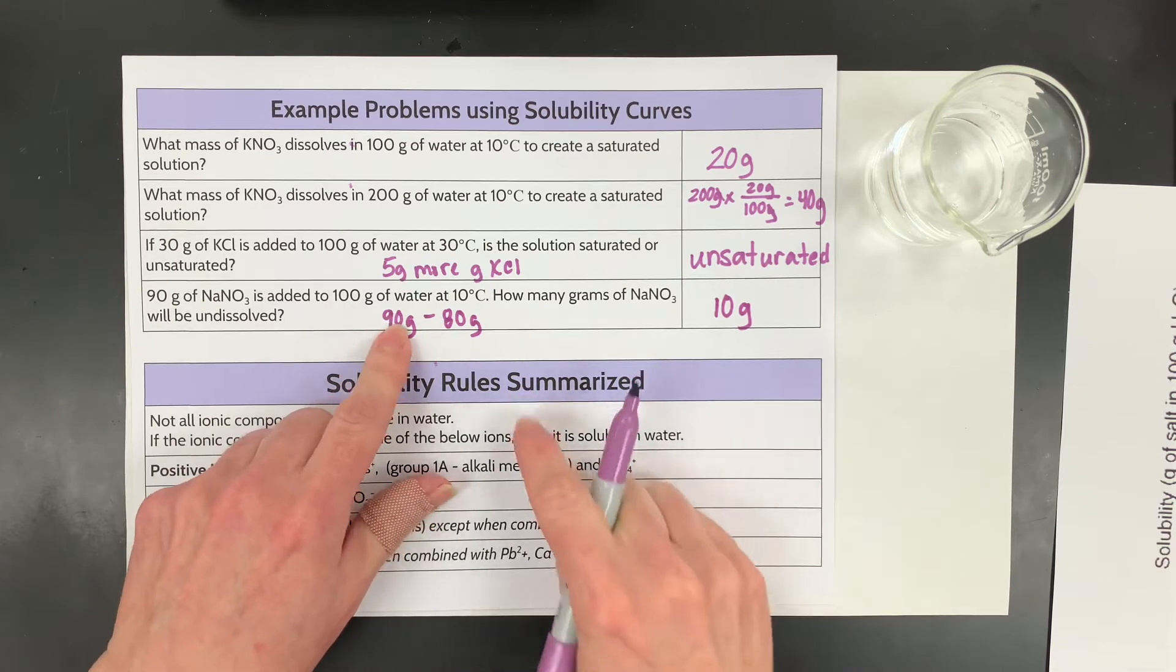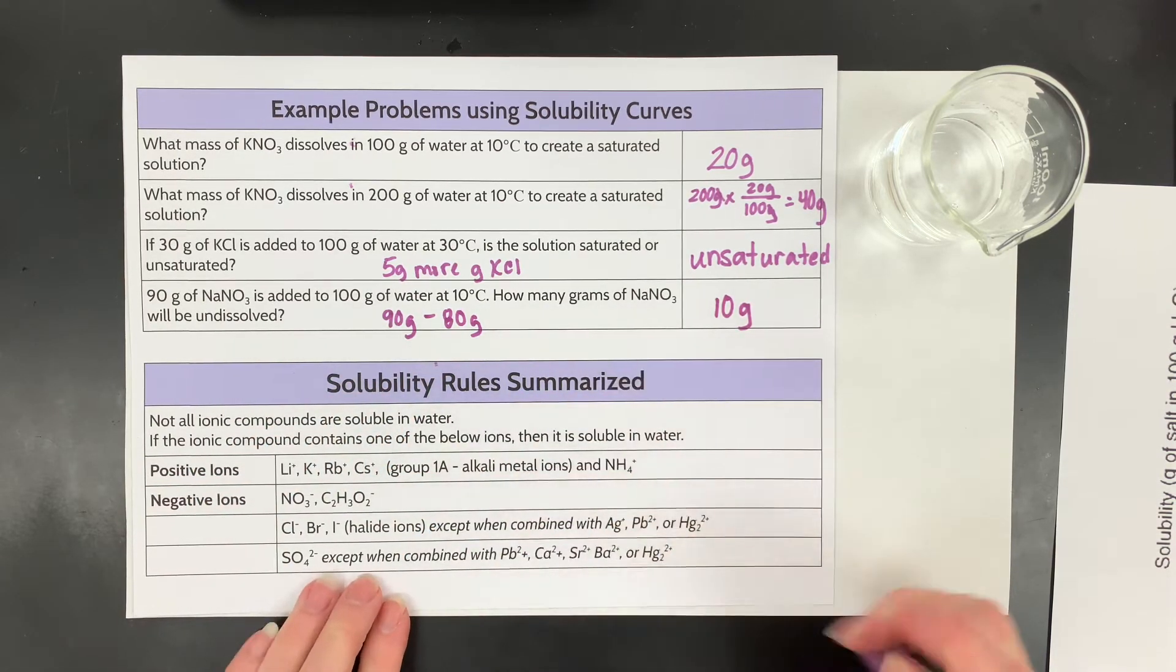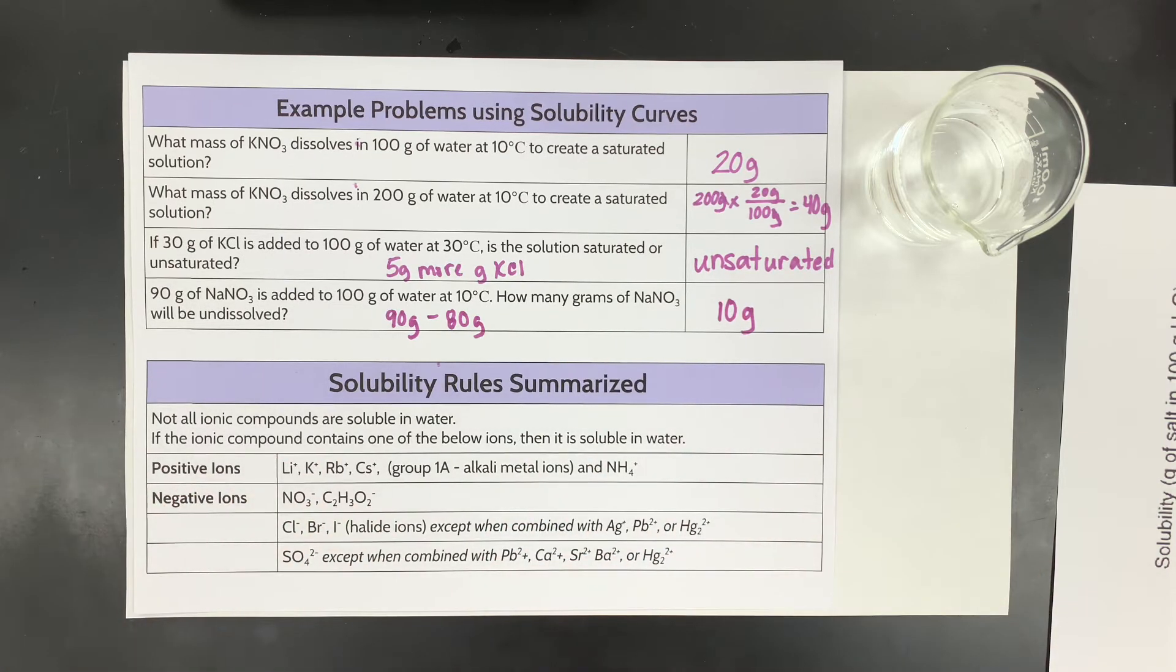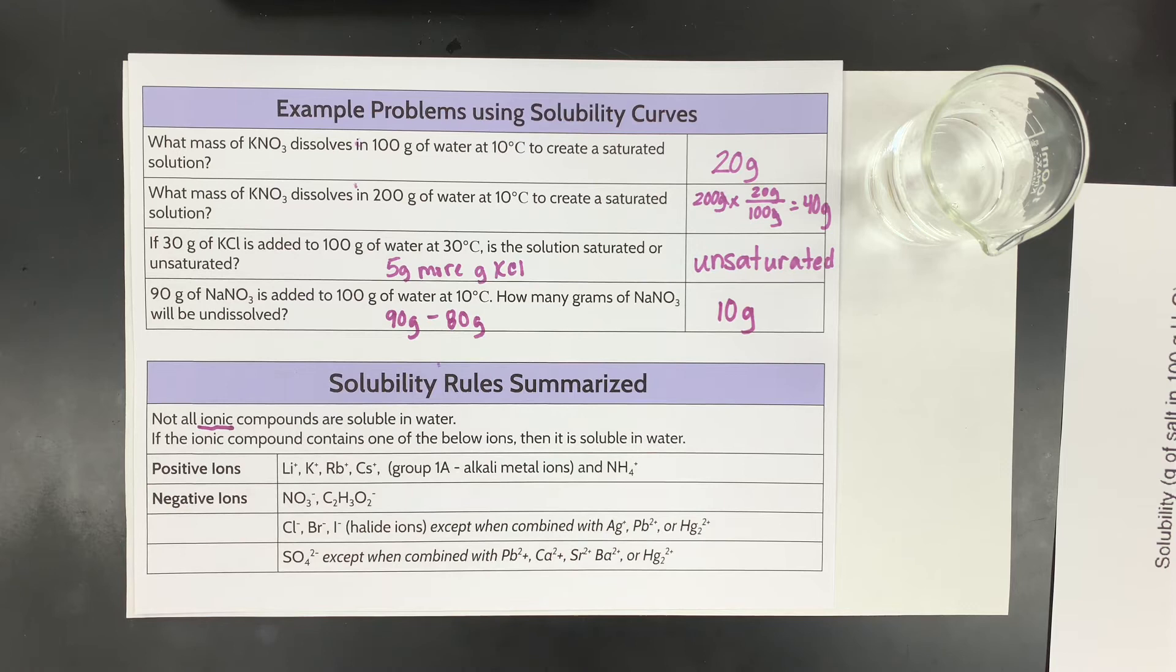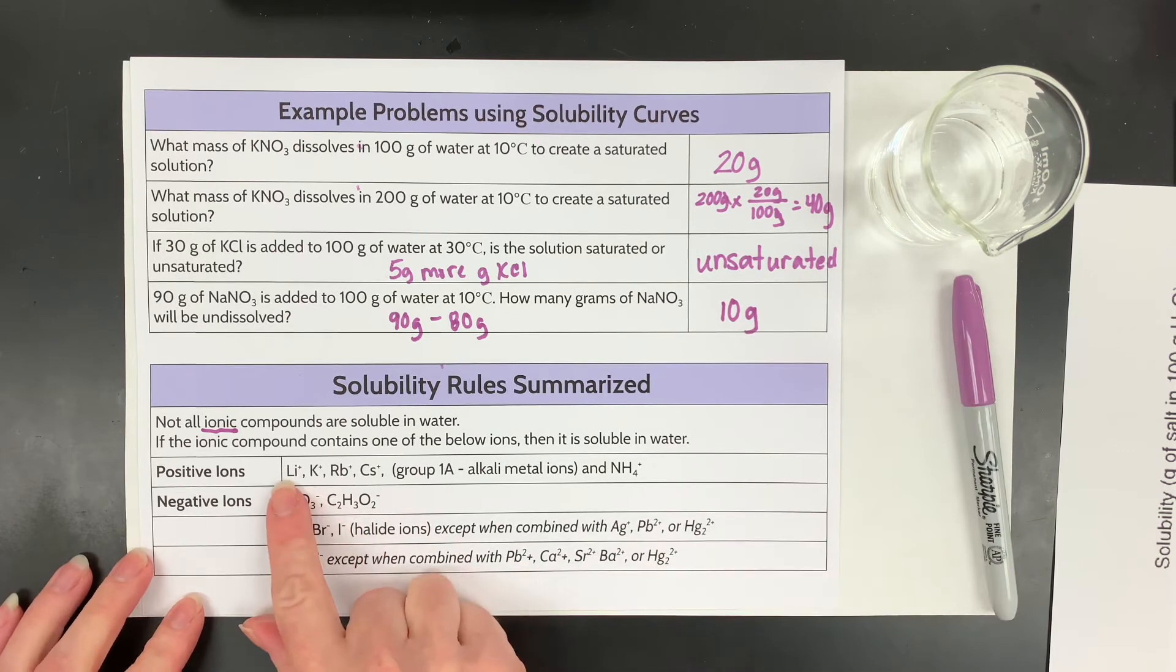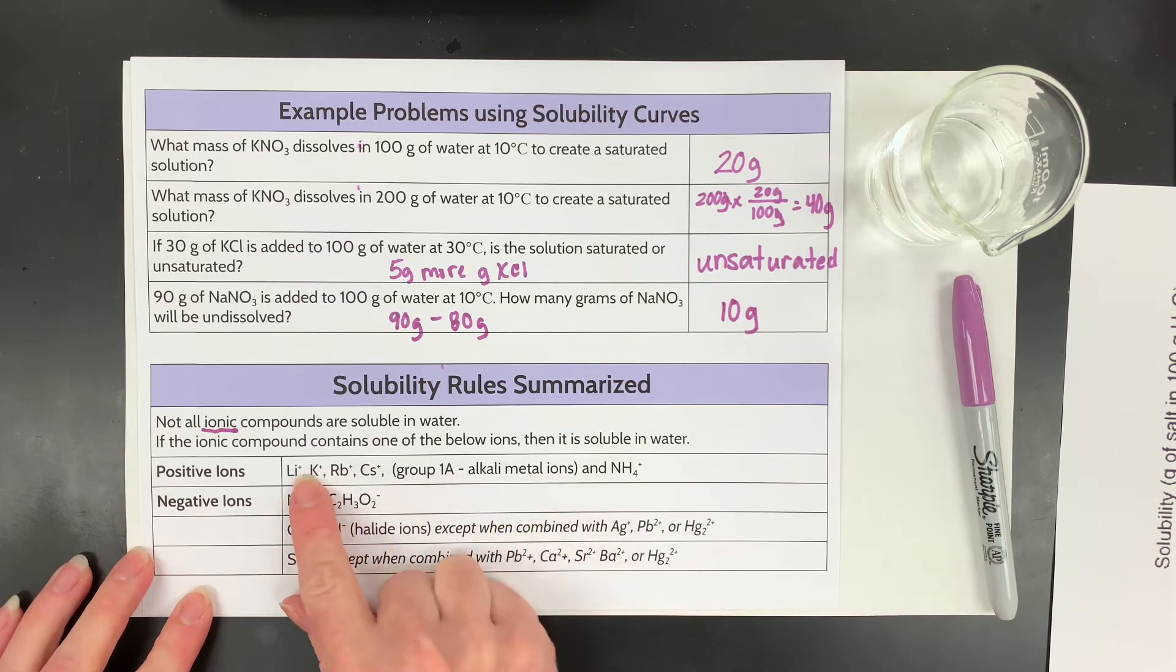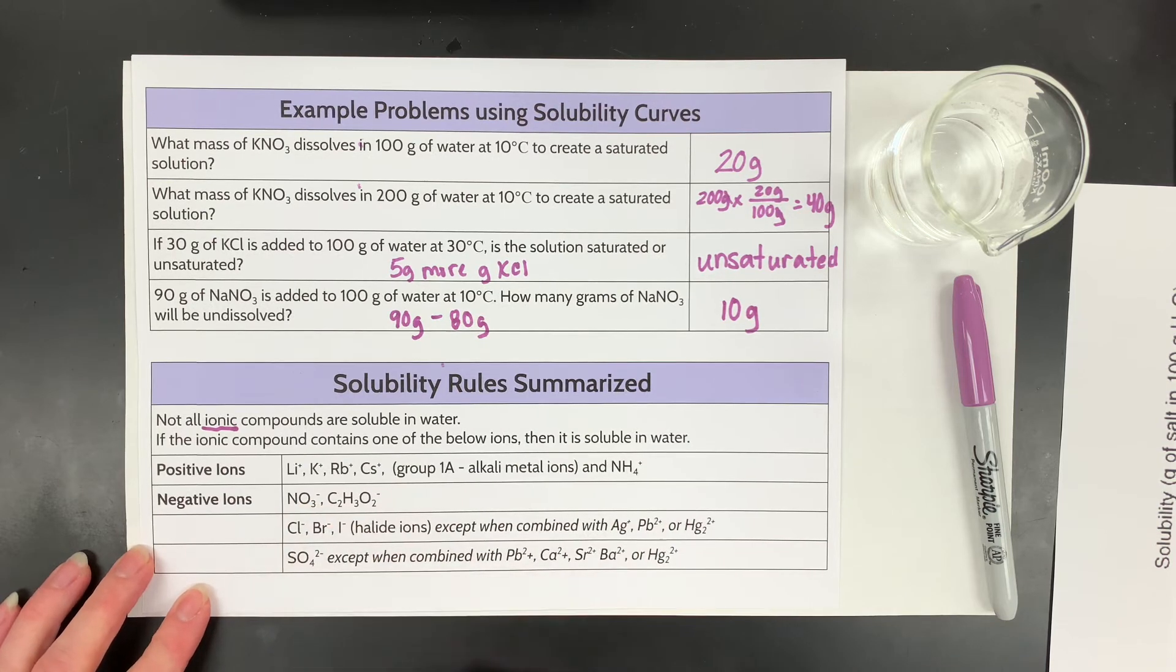All right, this is just a really quick summary of a larger set of solubility rules, and these again are for ionic compounds. If you'd like the rules for solubility with polar and non-polar molecules, you'll want to watch my solution formation video. So if it has an alkaline metal or group one, they're typically soluble, or ammonium. If it has nitrate or acetate it's soluble.